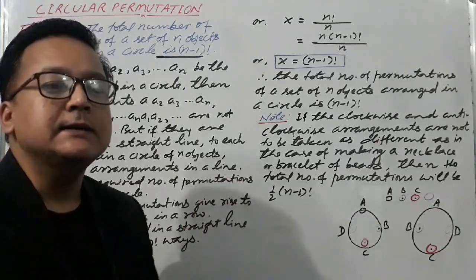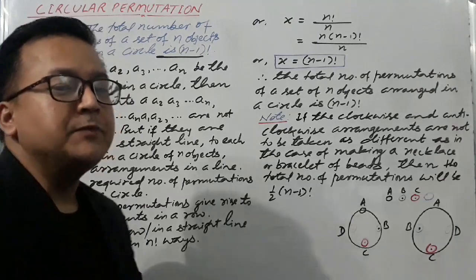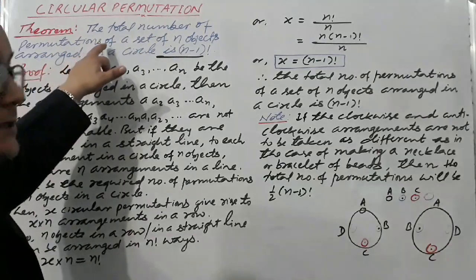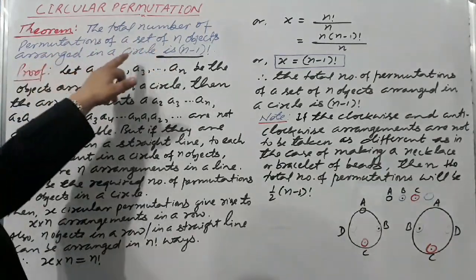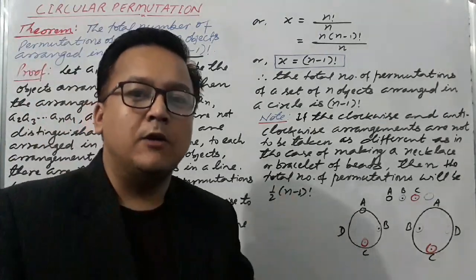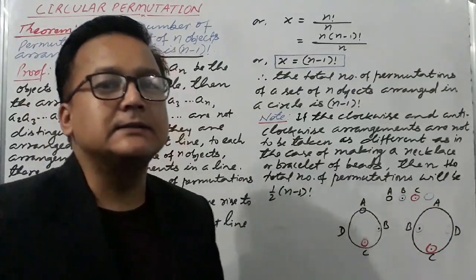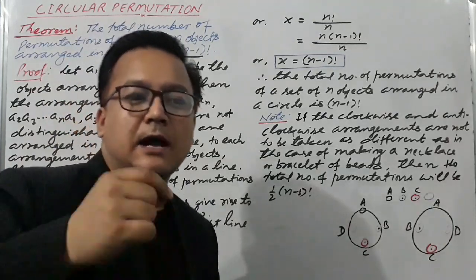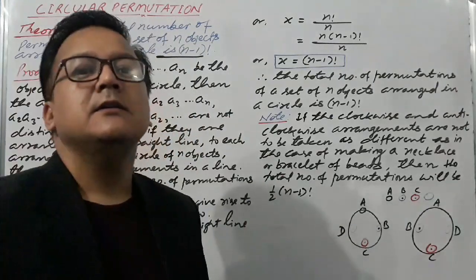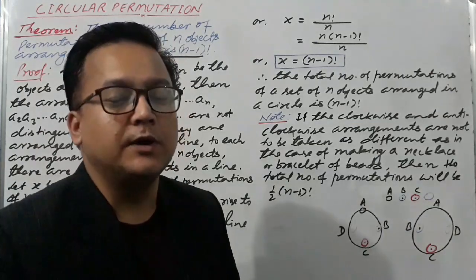Circular permutation means a number of different arrangements in a circle. The theorem is: the total number of permutations of a set of N objects arranged in a circle is (N−1) factorial. So if we have N objects and want to arrange them in a circle, we can arrange N objects taken all at a time in a circle in (N−1) factorial ways.